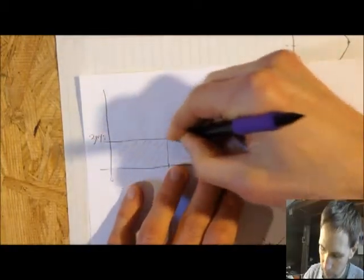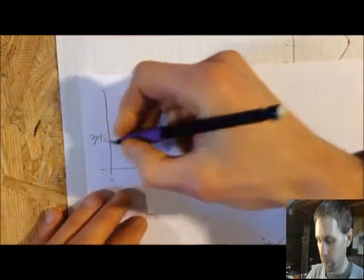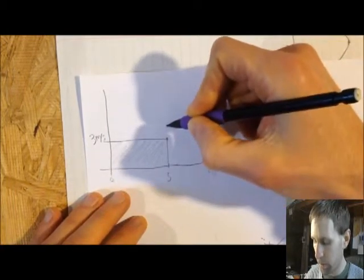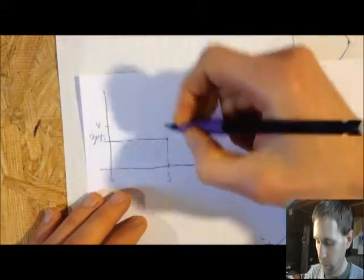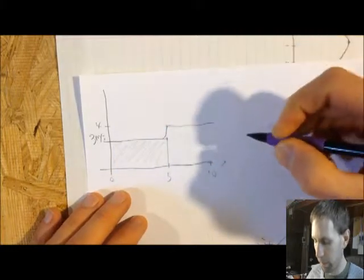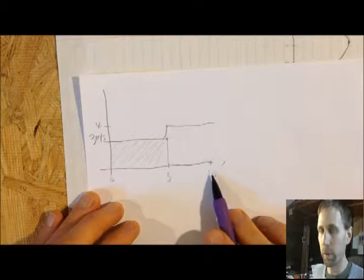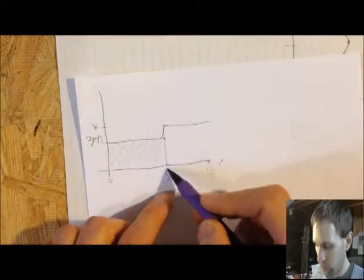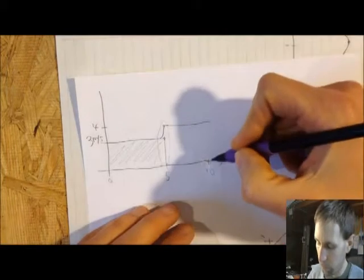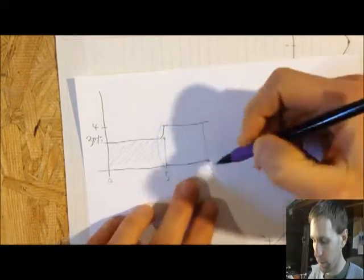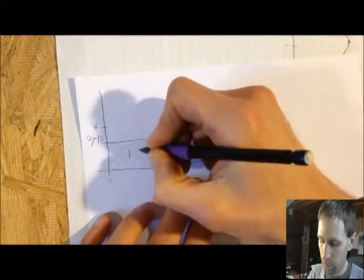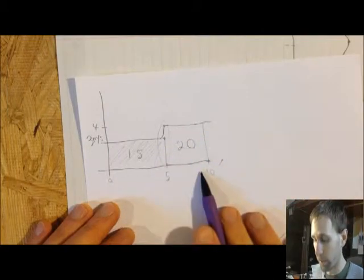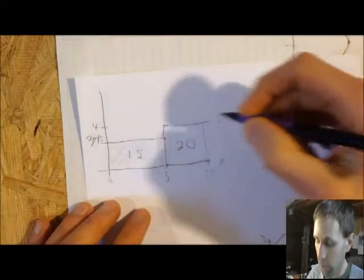What if it's constant from 0 to 5 but then jumps to 4 meters per second from 5 to 10? You would handle it very similarly — focus on each piece: traveling at 3 meters per second for 5 seconds, then 4 meters per second for 5 seconds. That gives 15 plus 20 equals a total of 35 meters.